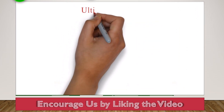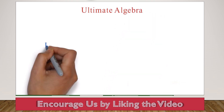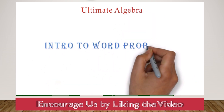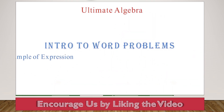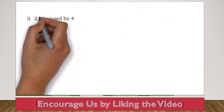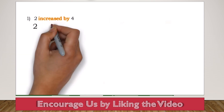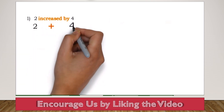Welcome to another video from ultimatealgebra.com. We are still looking at expressions and word problems. We will be looking at some examples — hope you have printed out the expression sheet, you have to know all of it. Translate the following expression. Number 1: 2 increased by 4. We know that 'increased by' means addition, so this will be 2 plus 4.